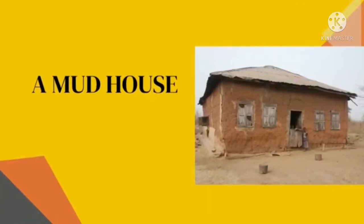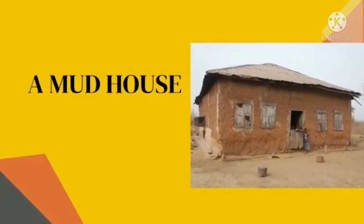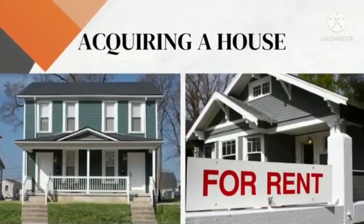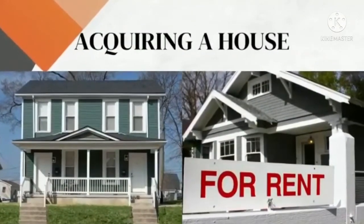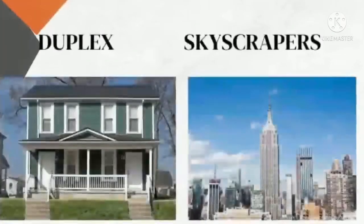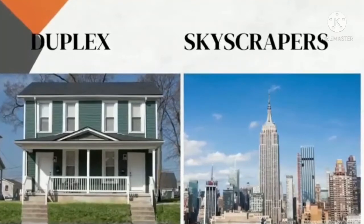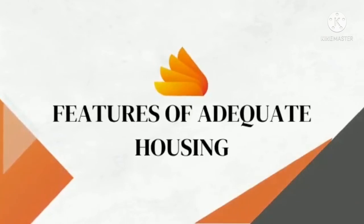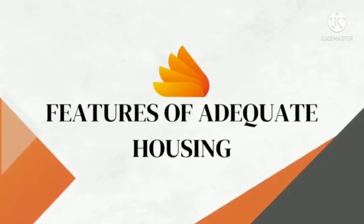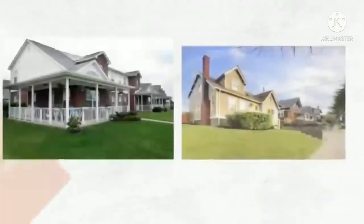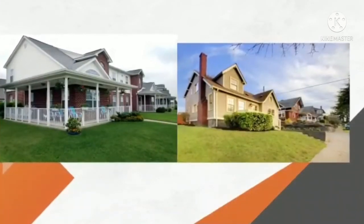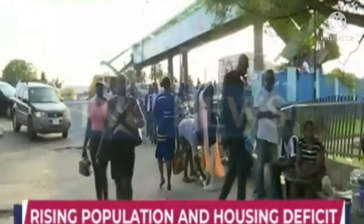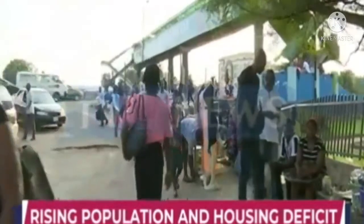This is the image of a mud house, which is most predominant in villages in Nigeria. People can own their own houses or rent them. Other types of houses are duplexes and skyscrapers. Everyone has the right to adequate housing. Adequate housing has to be well-ventilated and should have enough space.